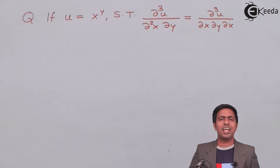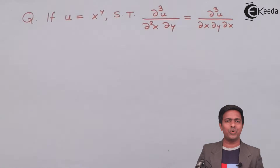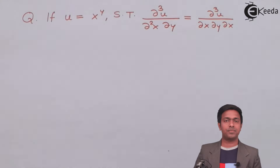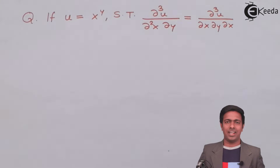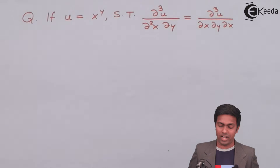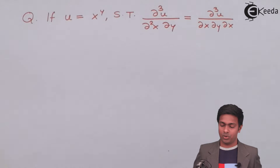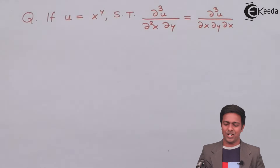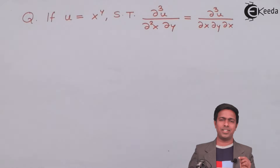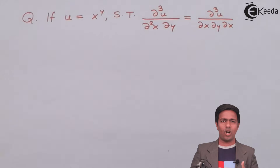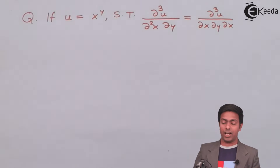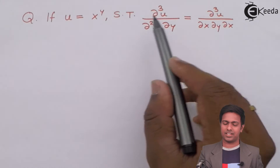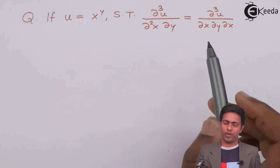Here we have u = x^y and we have to show that ∂³u/∂²x∂y is equal to ∂³u/∂x∂y∂x. On both sides we have a cube, meaning the degree is 3, and therefore it is called a higher order differential term. Since this degree is greater than 1, these become higher order terms, and we have to show these two results are equal.